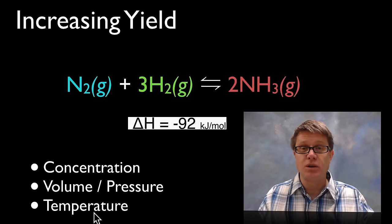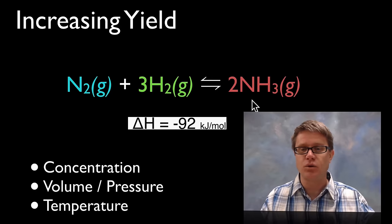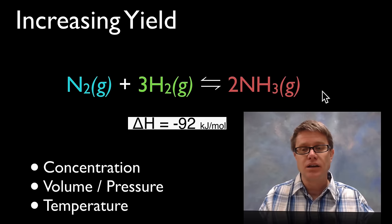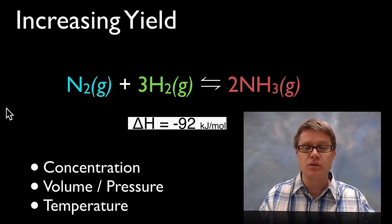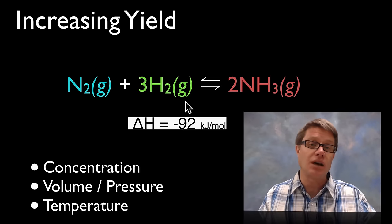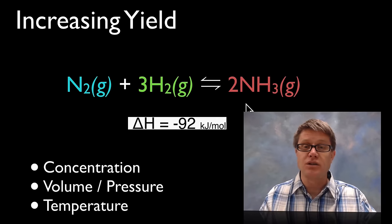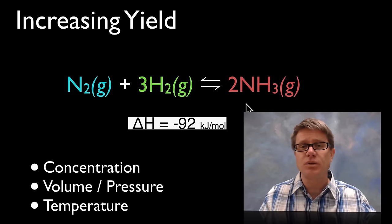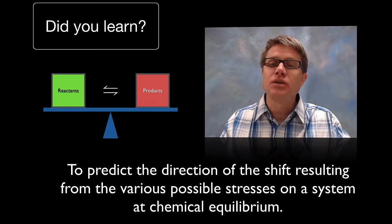Now let's look at temperature. The temptation is to just heat it up, but since this is an exothermic reaction we have more heat on the right side. Increasing the temperature actually pushes the reaction back to the left side. So to increase percent yield we'd want to decrease this reaction's temperature. In actuality there's a nice balance — we want it to go quickly, so temperature and pressure are balanced out.